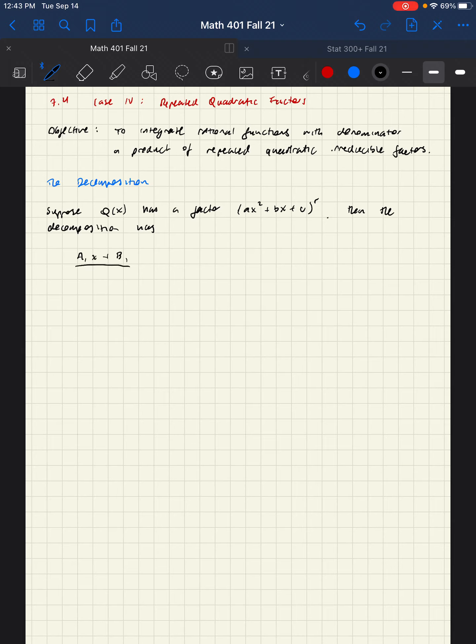a1x plus b1 over ax squared plus bx plus c, plus a2x plus b2 over that same quadratic factor squared, plus dot dot dot all the way up until you get the last power of that factor. These a's and b's are undetermined coefficients.